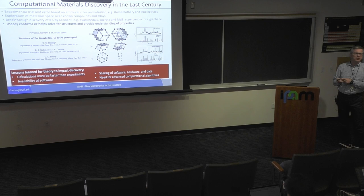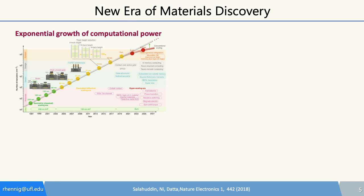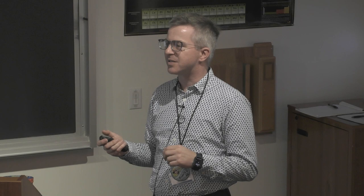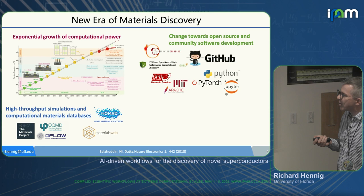We're riding on the wave of exponential growth of computational power. We have changed towards open source and community software development. Every single talk today had GitHub mentioned, where the software and data are available. High-throughput simulations and computational databases — the Materials Project, but also Nomad, OQMD, AFLOWLIB, our own MaterialsWeb, and many more.